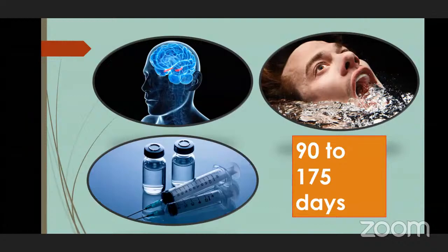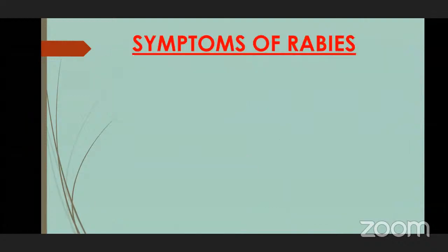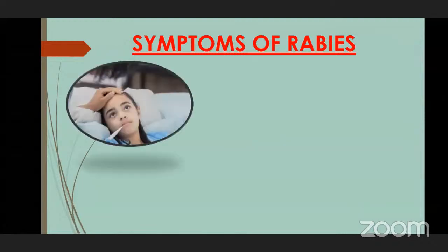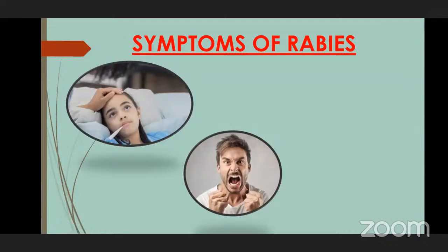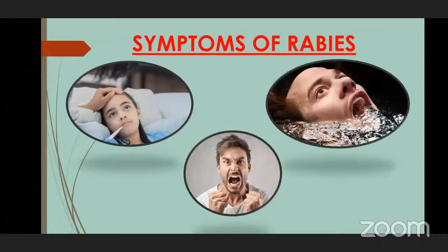Rabies is a fatal disease, but it can be prevented by timely vaccination. Symptoms start to appear within 90 to 170 days of a dog bite. The symptoms include hydrophobia — extreme fear of water — fever for 2 to 12 weeks, and exaggeration in behavior, meaning the person makes any situation seem larger or worse than it actually is.